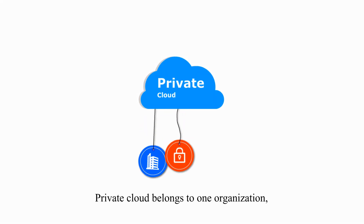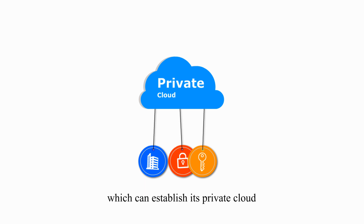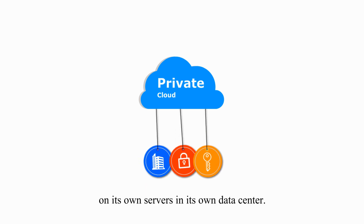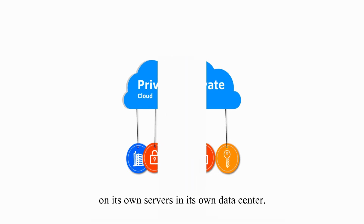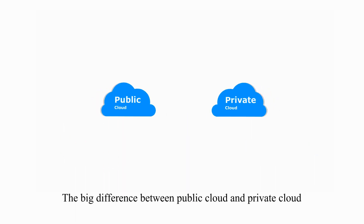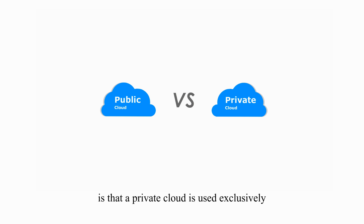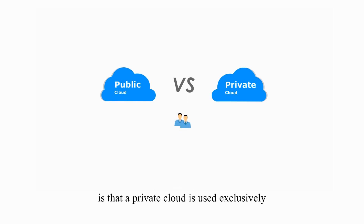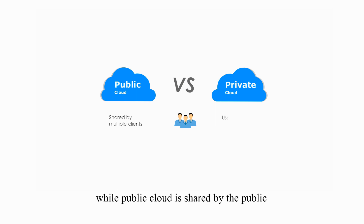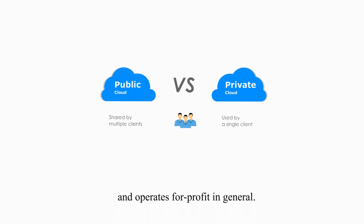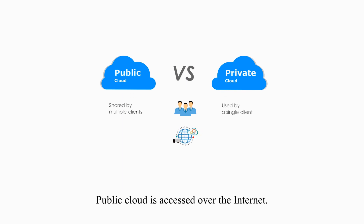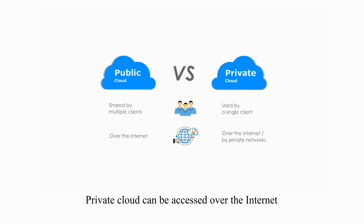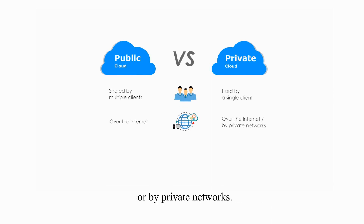Private cloud belongs to one organization, which can establish its own private cloud on its own servers in its own data center. The big difference between public cloud and private cloud is that private cloud is used exclusively by a single organization, while the public cloud is shared by the public and operates for profit in general. Public cloud is accessed over the internet, while private cloud can be accessed over the internet or by private networks.